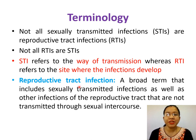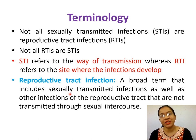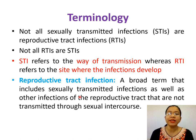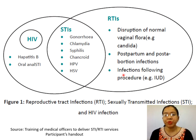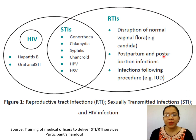Reproductive tract infection is a broad term that includes sexually transmitted infections as well as other infections of the reproductive tract that are not transmitted through sexual intercourse. In this figure, you can see that reproductive tract infections can be sexually transmitted, or we can have RTIs that are not sexually transmitted, like bacterial vaginosis, candidiasis, postpartum and post-abortal infections, and infections following procedures like intrauterine devices.